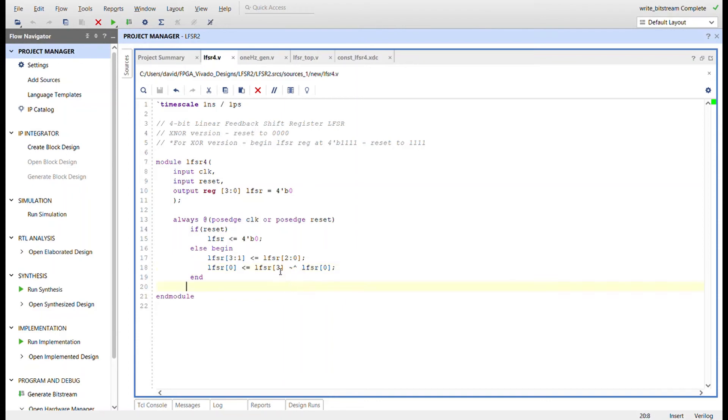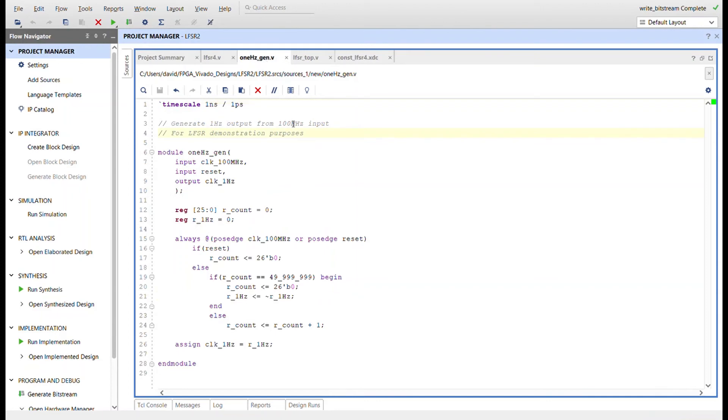Here's a 1 Hertz generator, again the same one I used before. Not really going to go through it, but this is to take in a 100 megahertz signal from the Basys 3 and generate a 1 Hertz signal.